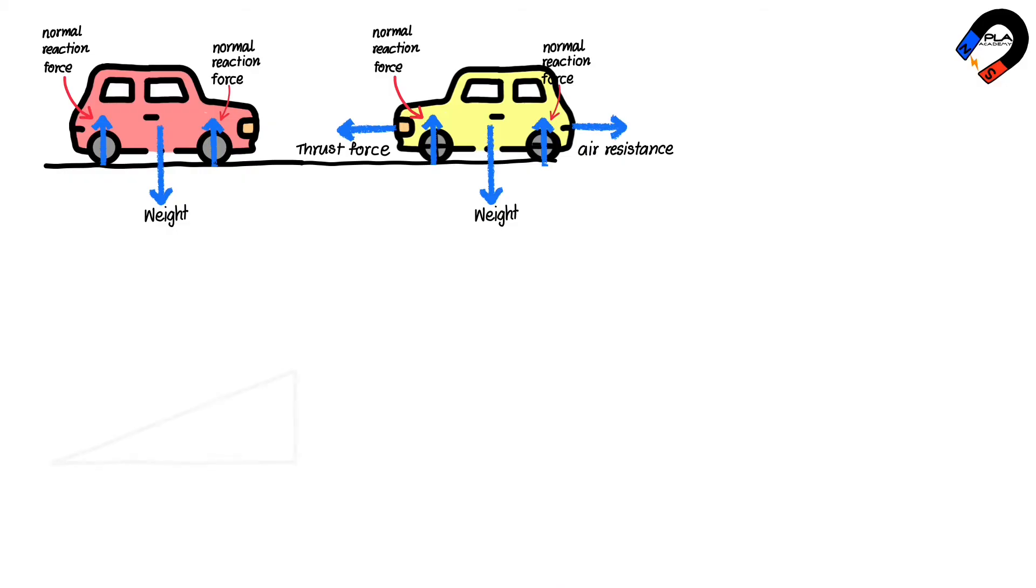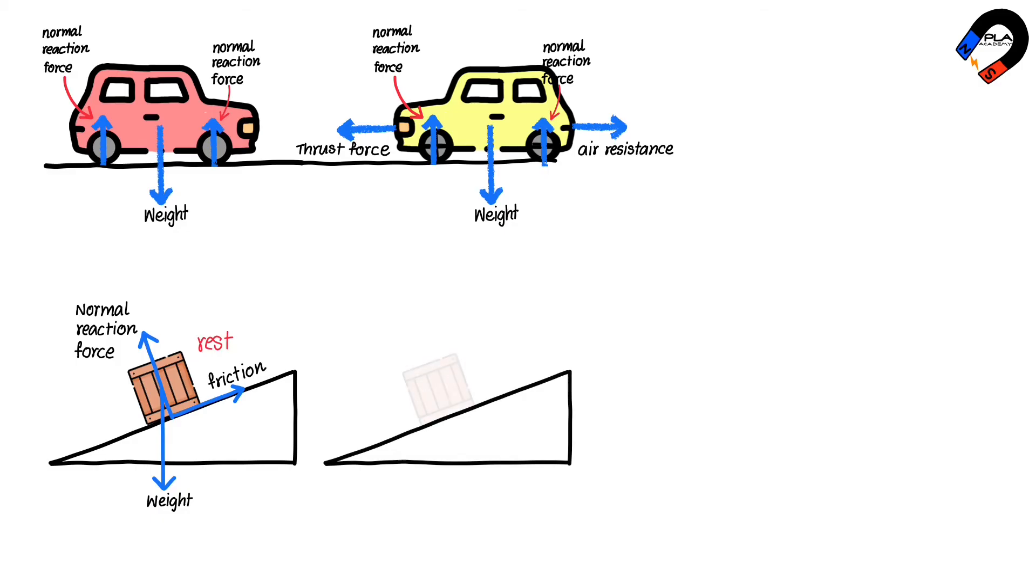When a box is at rest on a rough incline, there is weight acting downward, normal reaction force acting perpendicular to the slope, and friction acting upward parallel to the slope. When we tie a string to the box and pull it, causing the box to move up the incline,